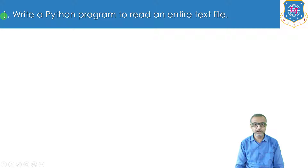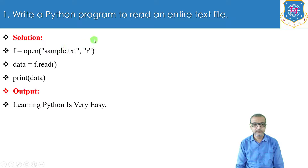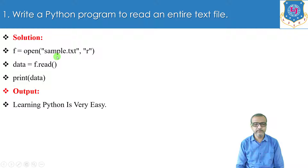Program number one: write a Python program to read an entire text file. To read the entire text file, we will open that particular file in read mode — that is f equals to open('sample.txt', 'r'). Here we have opened the file named sample.txt in read mode.